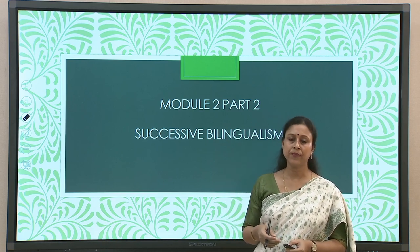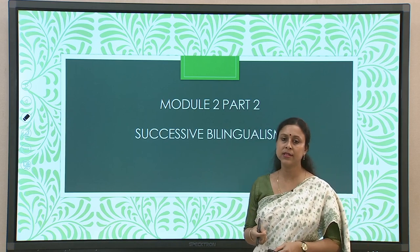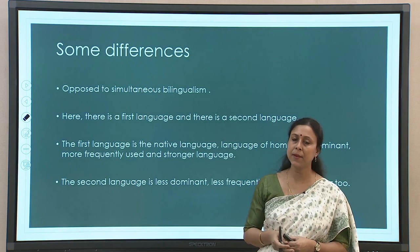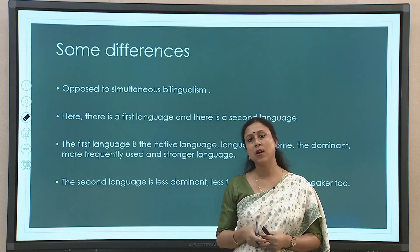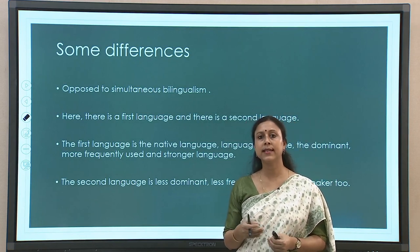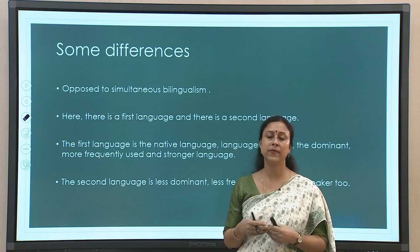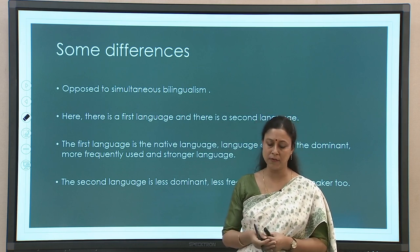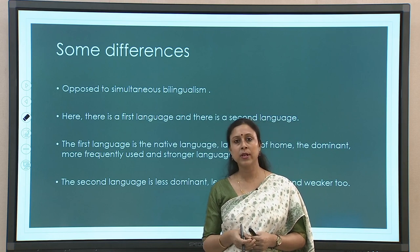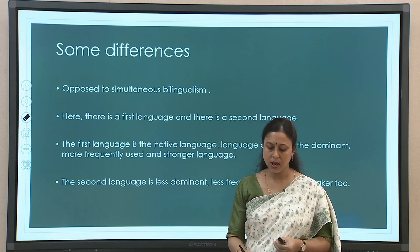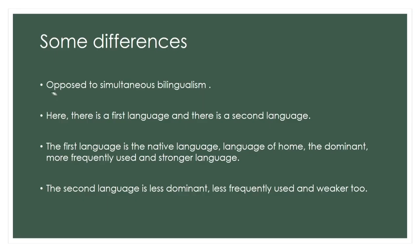Now we will move on to the second part, which is successive bilingualism. Successive bilingualism, as the name suggests, is when one learns two languages in succession — one language is learned first and then another language is learned. In a sense, this is the opposite of simultaneous bilingualism.